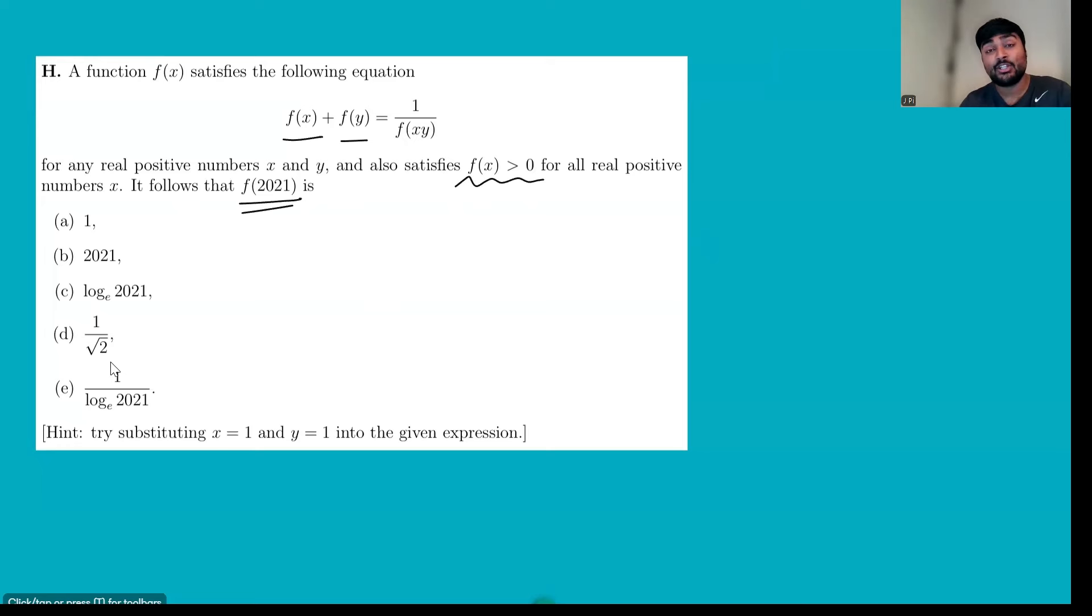This was taken from the maths admissions test for the University of Oxford back in 2021, unsurprisingly given there's so many 2021s floating about here. We've been given a small hint at the bottom, which is rare, at least for the maths admissions test. It tells us to try substituting x equals 1 and y equals 1 into the given equation.